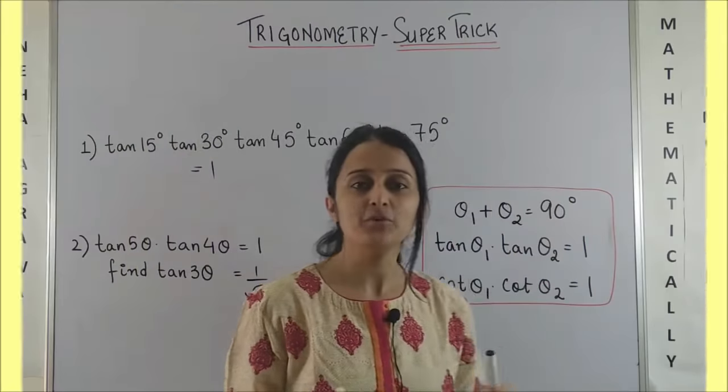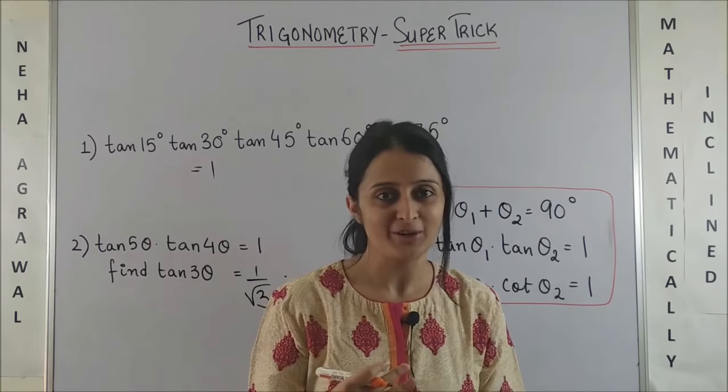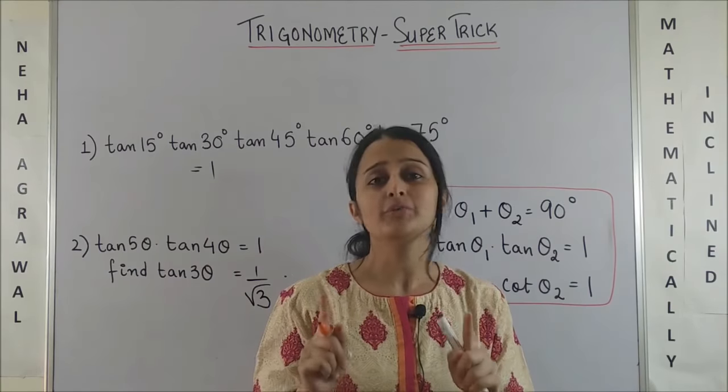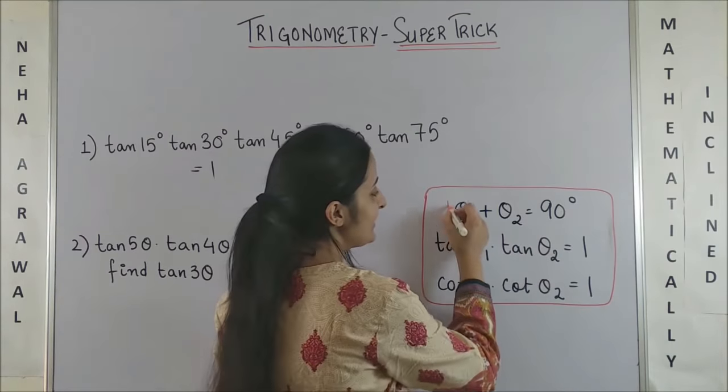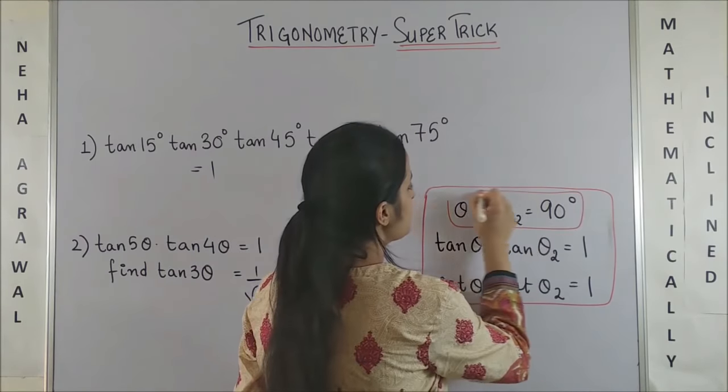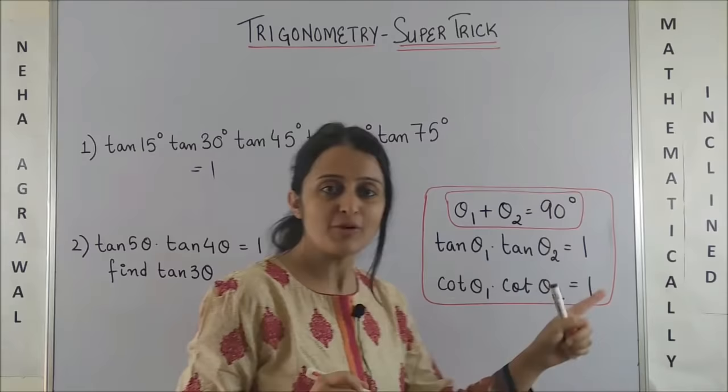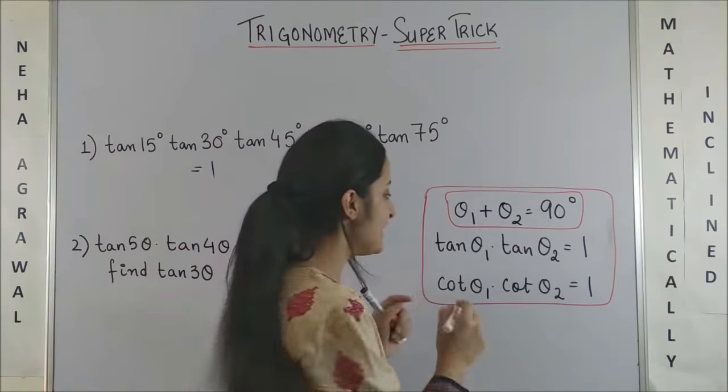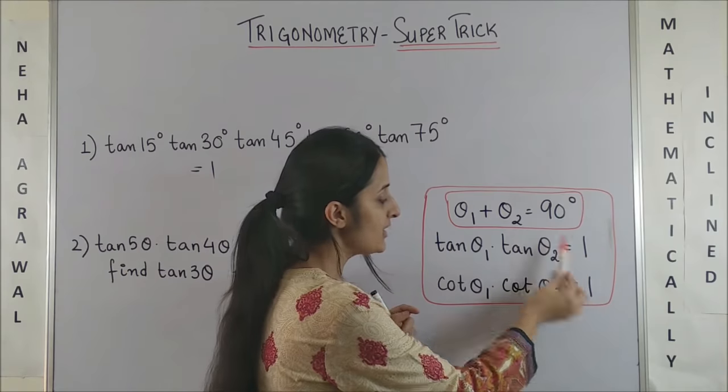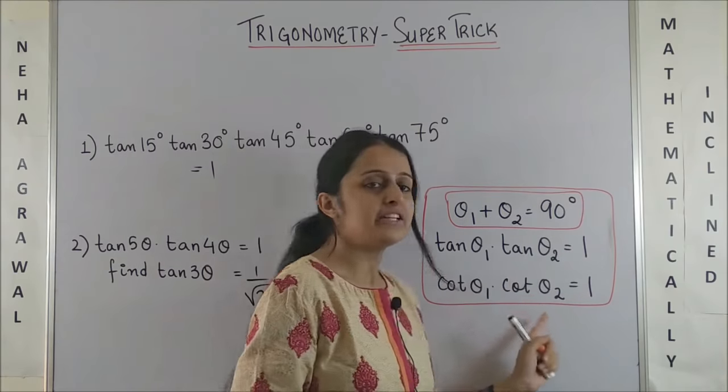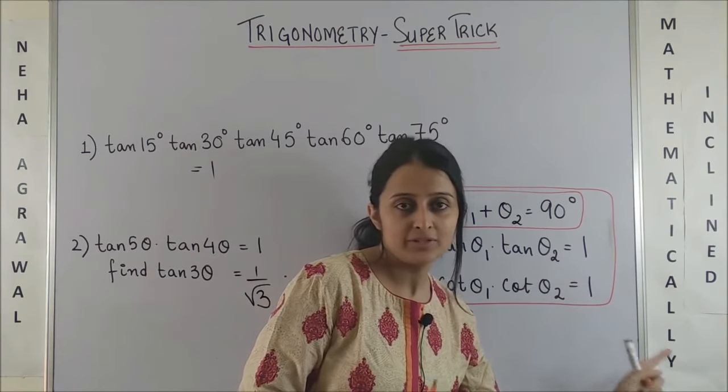I am sharing with you a very simple trigonometric logic which I am sure you would have never thought would come so handy. So, when θ₁ + θ₂ = 90°, that means if sum of two angles is 90 degrees, then you can say tan θ₁ tan θ₂ = 1 or cot θ₁ cot θ₂ = 1.